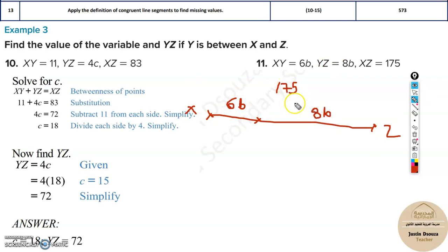Over here, it's not subtracting. All you need to do is add these both. 6b plus 8b will be equal to 175. So add them up. It will be 14b equals 175. If you divide 175 by 14, that would be the answer.